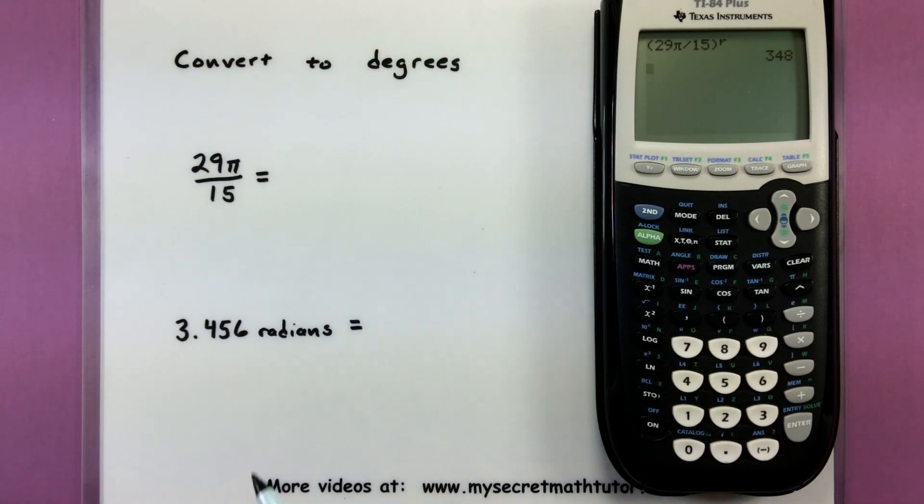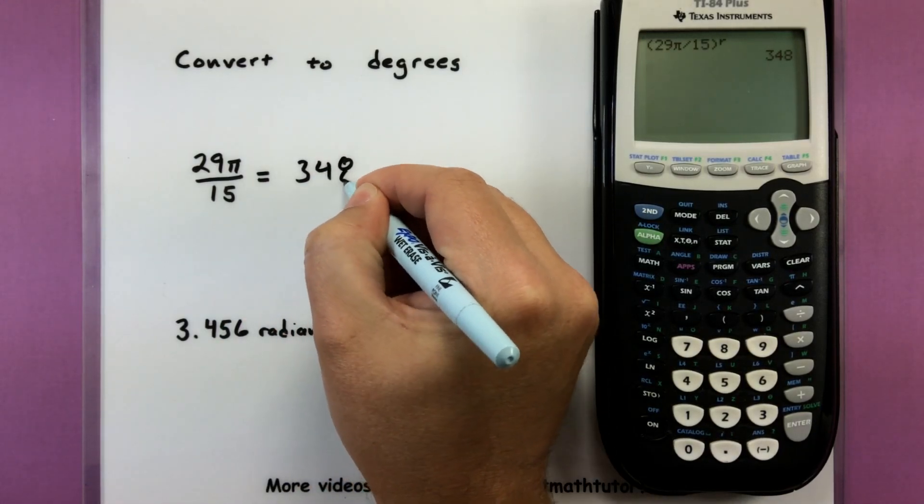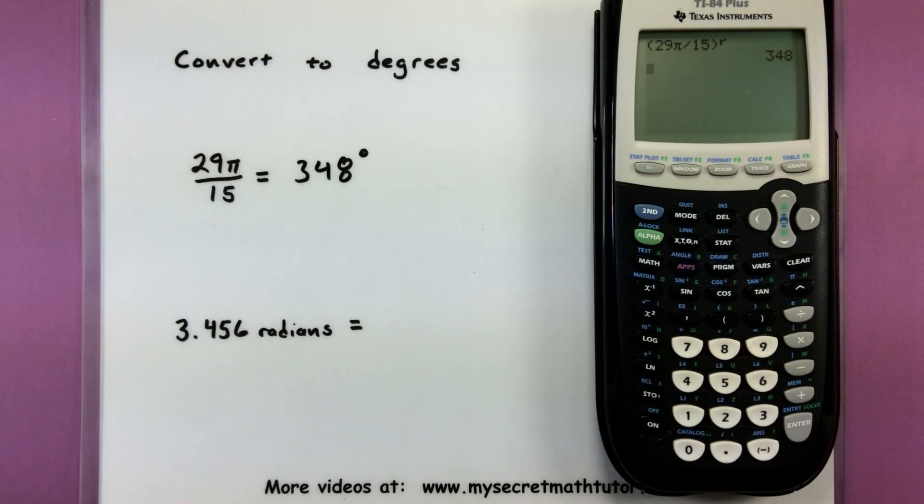So this is 348 degrees. Now that one you probably could have converted pretty easily by multiplying by 180 divided by π. But hey, the calculator works pretty good as well. Let's do this again with something that's a little bit more difficult.